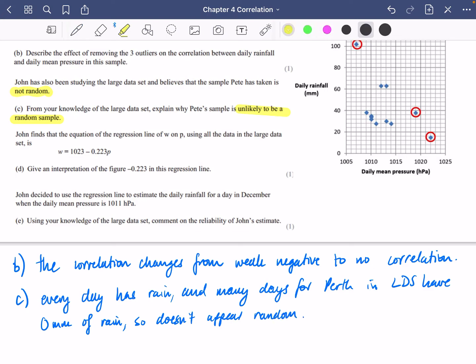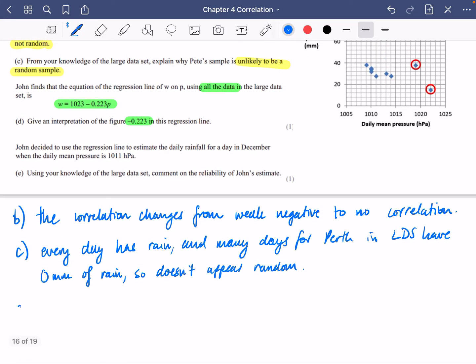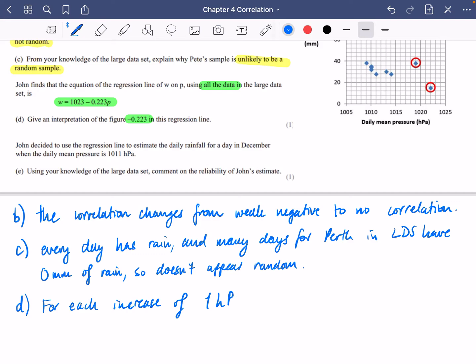Okay last bit. John finds that the equation of the regression line of all the data is this. Give an interpretation of the figure minus 0.223 in this regression line.